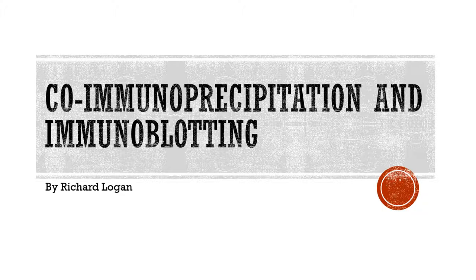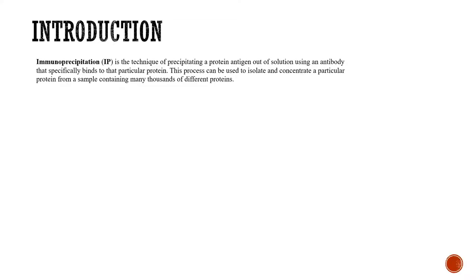Co-immunoprecipitation and Immunoblotting by Richard Logan. Immunoprecipitation is a technique of precipitating a protein antigen out of a solution using an antibody that specifically binds to that particular protein. This process can be used to isolate and concentrate a particular protein from a sample containing many thousands of different proteins.